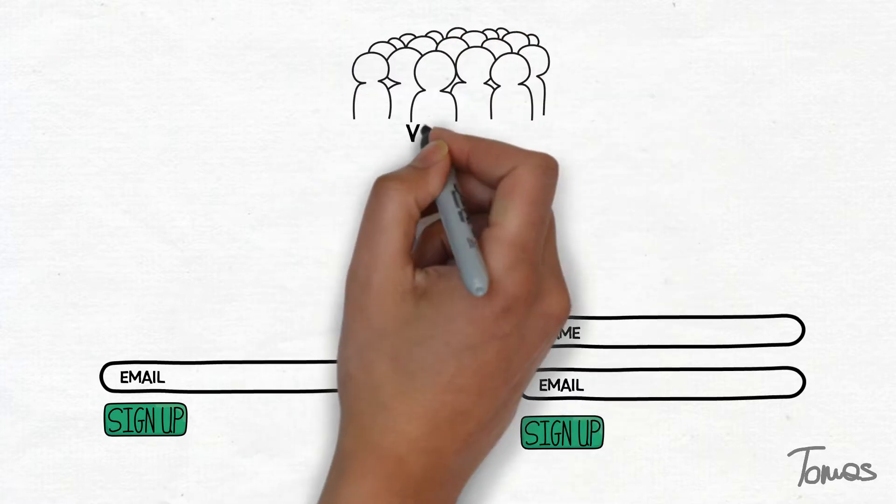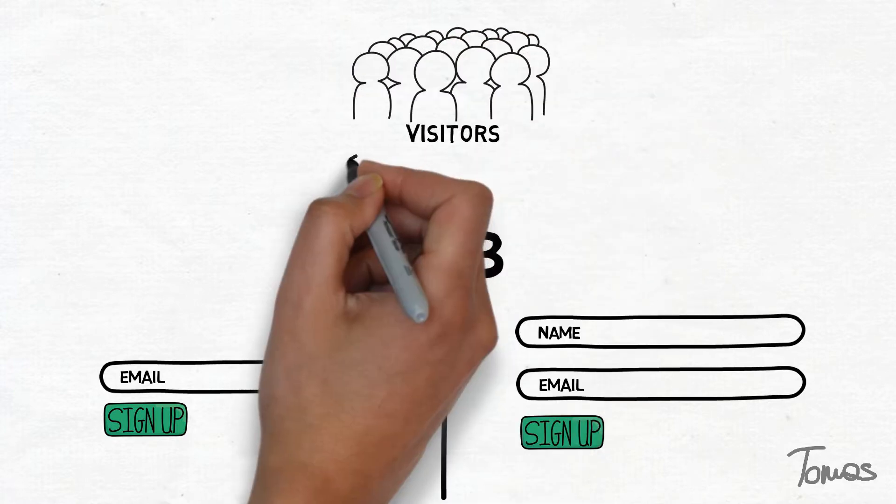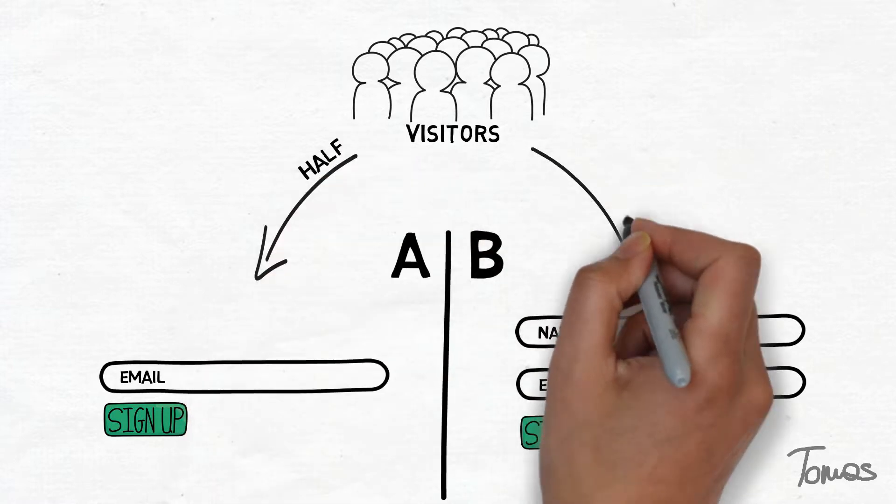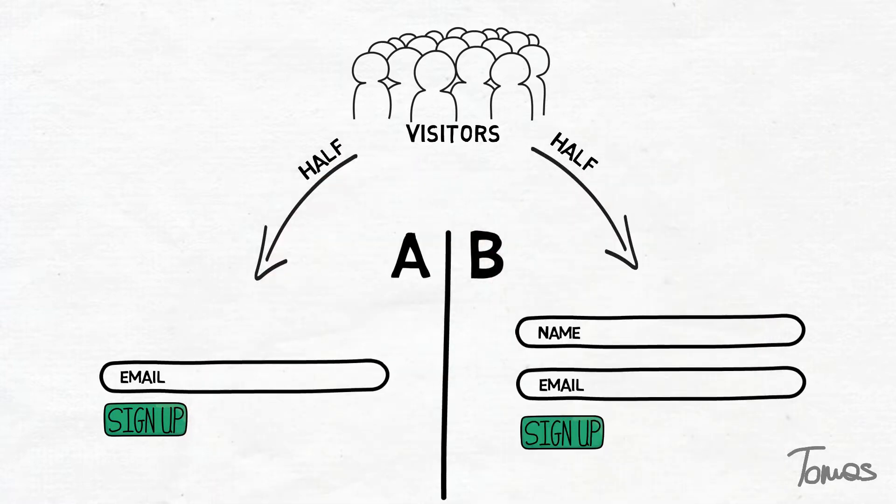Then we take all our visitors to the website and direct half of them to the A version and half of them to the B version.